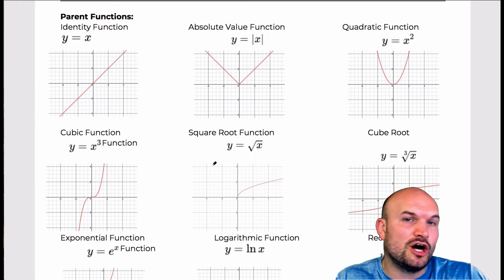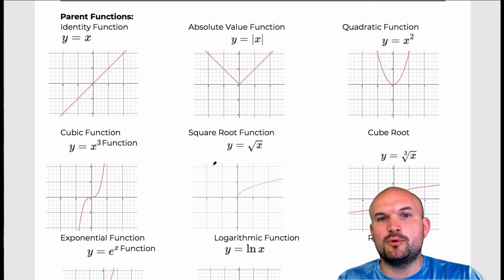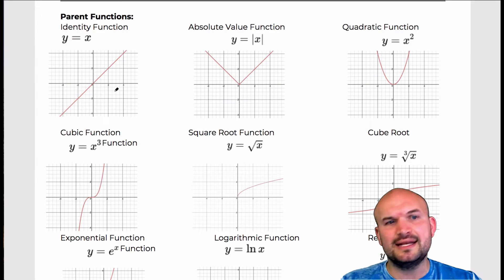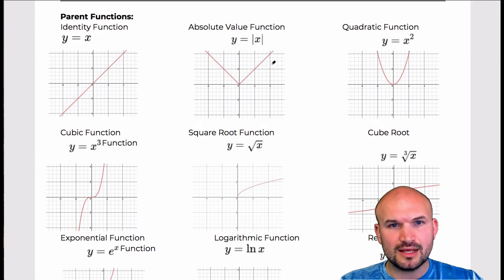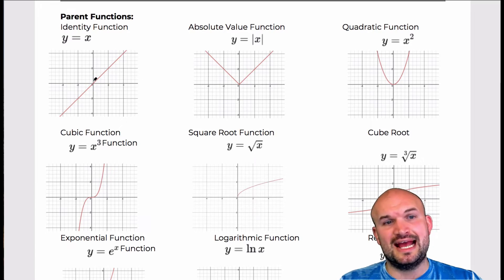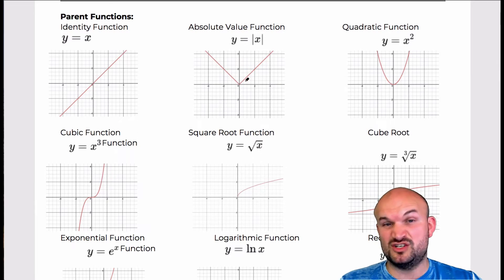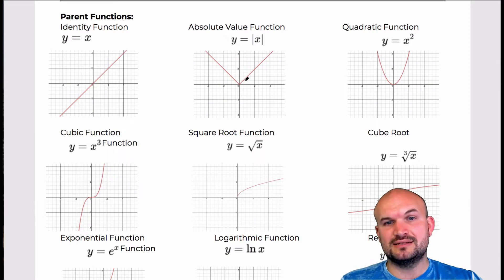Now that I've presented these 12 graphs, they're all fair game for any other point in the lesson. The identity function is your linear graph — this graph is always increasing. The domain is all real numbers and the range is all real numbers. It is an odd function, symmetrical about the origin. The absolute value function is decreasing then increasing. The domain is all real numbers and the range is from 0 to infinity. It is an even function, symmetrical about the y-axis, and it is bounded below.